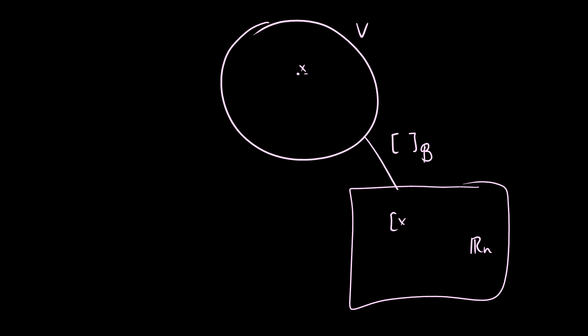So for instance, if we want to draw a picture of this, so let's say this is our vector space V, and before we went to this space with the B transformation. So this takes some vector here, and it maps it to some vector in Rn. So this is x relative to B.